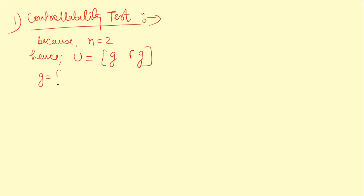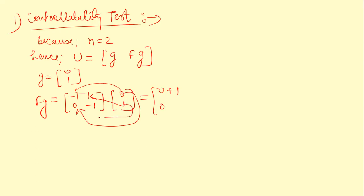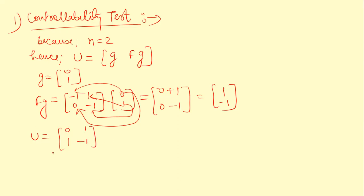G is [0, 1]ᵀ. To find FG, we multiply F = [-1, 1; 0, -1] by G = [0, 1]ᵀ: first row gives 0×(-1) + 1×1 = 1, second row gives 0×0 + 1×(-1) = -1. So FG = [1, -1]ᵀ. The controllability matrix U = [[0, 1], [1, -1]], and its determinant is 0×(-1) - 1×1 = -1, which is not equal to 0.